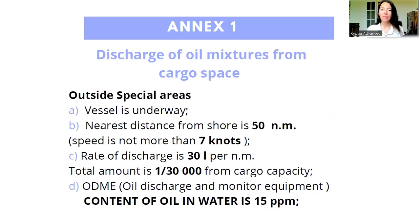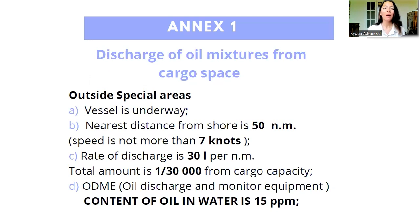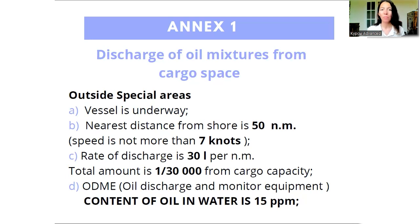Now we talk about the second part: discharge of oily mixtures from cargo space on oil tankers. Here we have different requirements, different numbers and distances. Outside special areas we can discharge oily mixtures if the vessel is underway. The distance from shore is 50 nautical miles, and speed is not more than 7 knots. The rate of discharge will be 30 liters per nautical mile. The total amount is 1/30,000 of cargo capacity. The vessel must be equipped with oil filtering equipment and oil discharge monitoring equipment. Content of oil is 15 ppm.